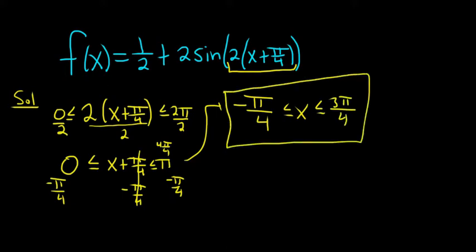Again, whenever you want to graph any sine function, the first step is just take the argument and always set it between 0 and 2π, then solve for x.